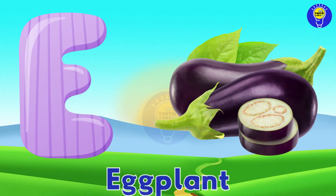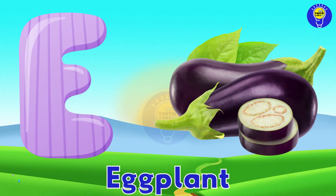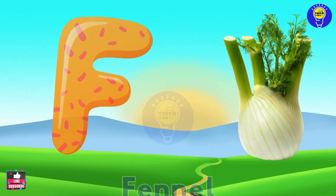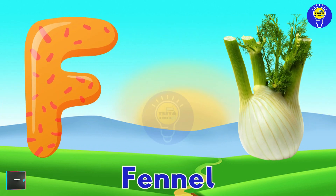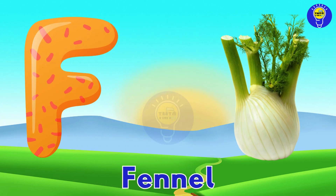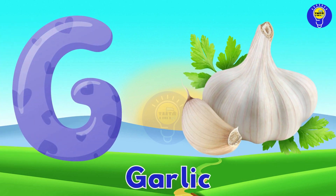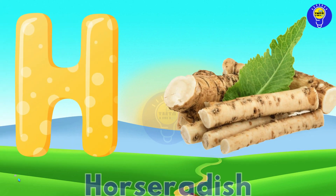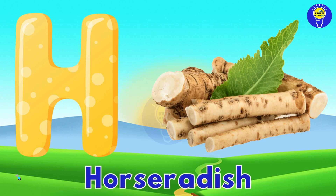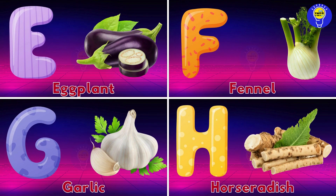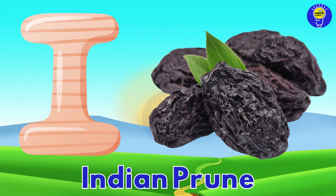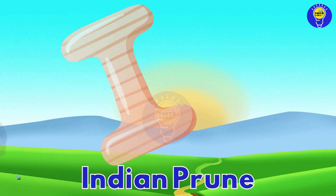E is for eggplant, eggplant. F is for fennel, fennel. G is for garlic, garlic. H is for horseradish, horseradish. I is for Indian prune, Indian prune.